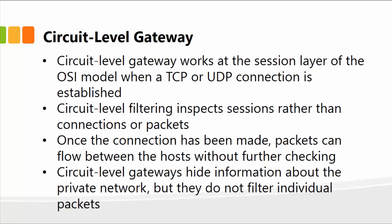The circuit level gateway is yet another approach. It works at the session layer of the OSI model when, for example, a TCP or UDP connection is established. It filters and inspects sessions rather than connections or packets — it's not concerned about the data itself but about the session. Once the connection has been made, packets can flow between the hosts without further checking. Circuit level gateways hide information about the private network, but they do not filter individual packets. The main difference from basic TCP/IP filtering is that it is only concerned with sessions.